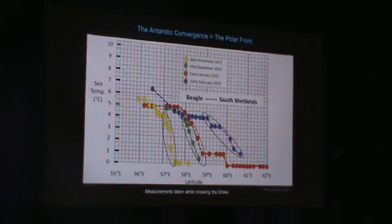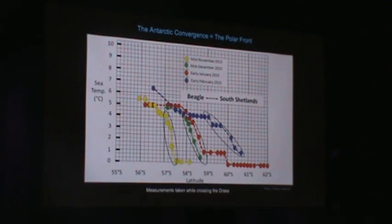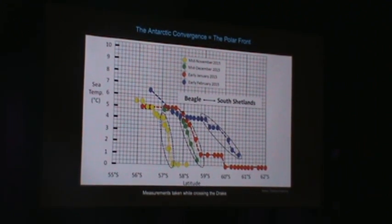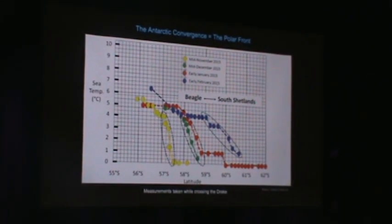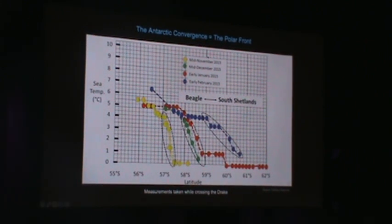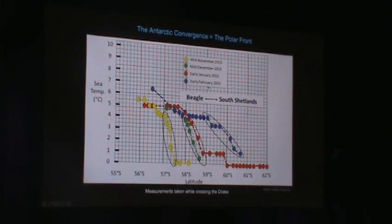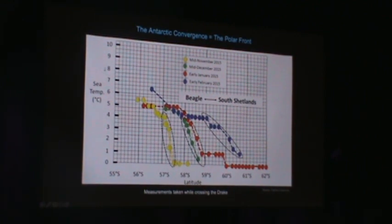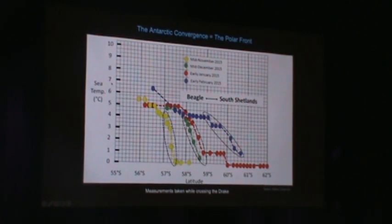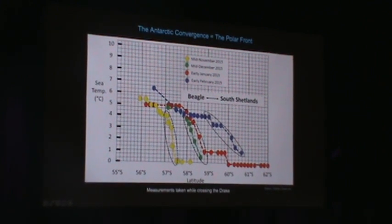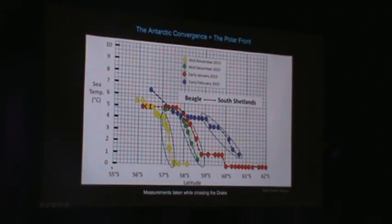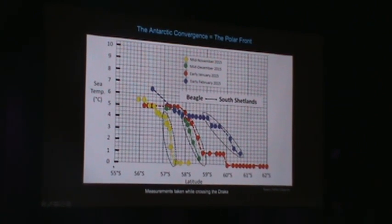A few years ago, a colleague and I traversed the Drake Passage on four different occasions and took water temperature measurements over this polar front. You'll see what we did in mid-November, mid-December, January, and February. On the left side you see the sea temperature scale, starting somewhere between 5 and 7 degrees Celsius, eventually dropping down to 0 or below as we proceed during the season.